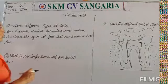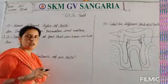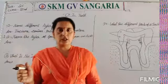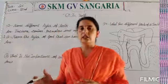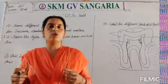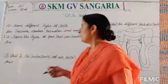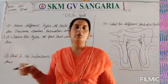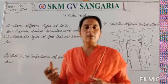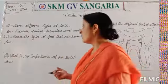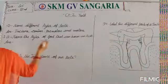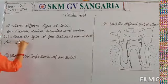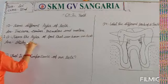Second question: name the type of food that can harm our teeth. The first type is sticky, sweet snacks.